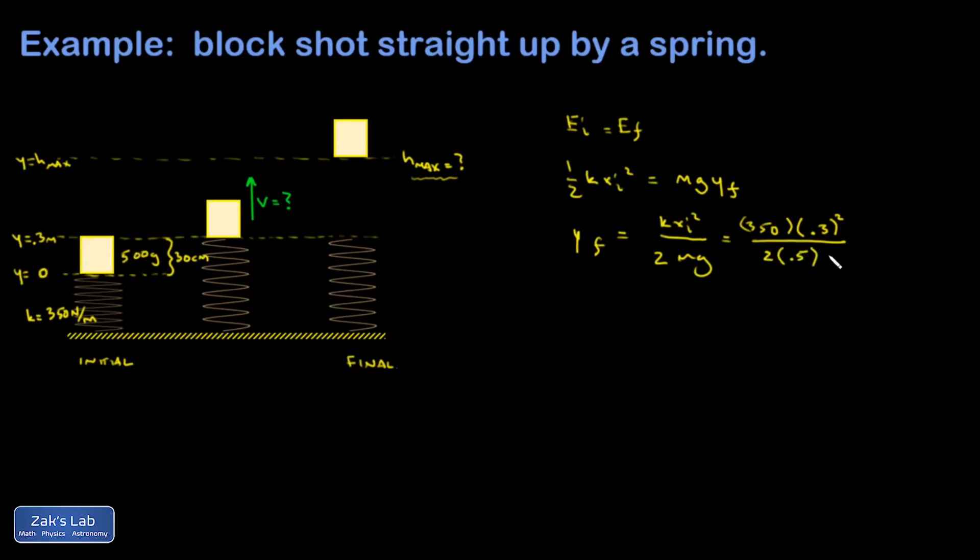Again, I need SI units, so 0.5 kilograms. G is 9.8. And when I run the numbers, I get 3.21, yeah, 3.21 meters.